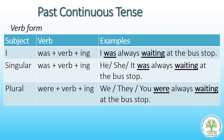The verb form for past continuous tense is: be-verb plus verb plus -ing. If the subject is I or singular, the verb form is 'was' plus verb plus -ing. If the subject is plural, the verb form is 'were' plus verb plus -ing. You can see the example illustrated.